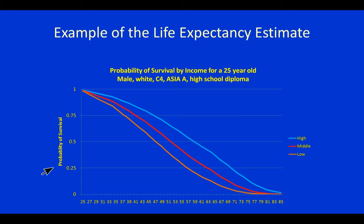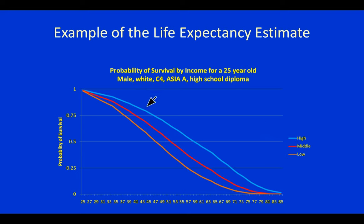In this graph we show survival curves as a function of familial income grouped into three categories: low, middle, and high income. The blue line represents high income, and as you can see, individuals in the highest income group have the greatest probability of surviving over time. There are substantial differences when you look along the bottom of the graph where actual years of life expectancy are calculated for an example case of a 25-year-old male.